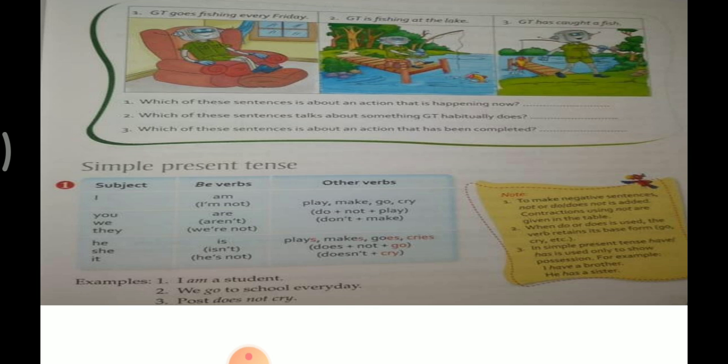Simple present tense — aaj ham log sadha vartamad kaal janenge. Subject: 'I' uses 'am'; other subjects use base verbs like play, make, go, cry, do — or with 'not': do not/don't. For 'he/she/it': is/is not, has not, plays, makes, goes, carries, does not go, does not cry.